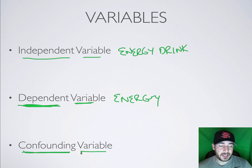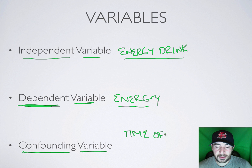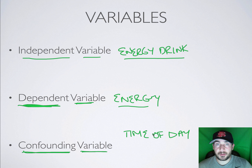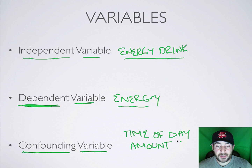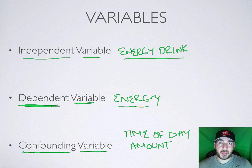A confounding variable is something that might get in the way. Things that might be confounding variables include the time of day — if you don't take them at the same time of day, say you take the Red Bull at noon and the Monster at 6am, they might provide different amounts of energy when you're reporting that. The amount that you drink could also be a confounding variable — Red Bulls come in smaller cans than Monsters, so if you don't control for that, it might be a confounding variable.